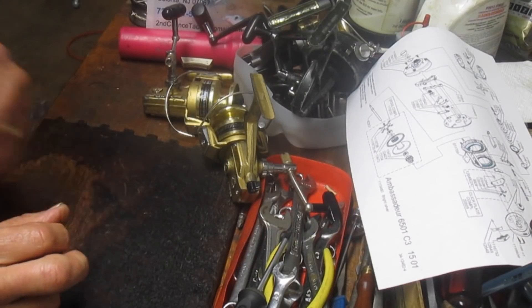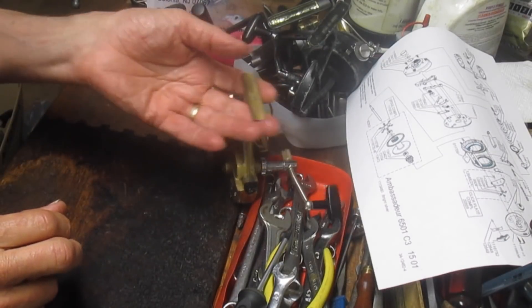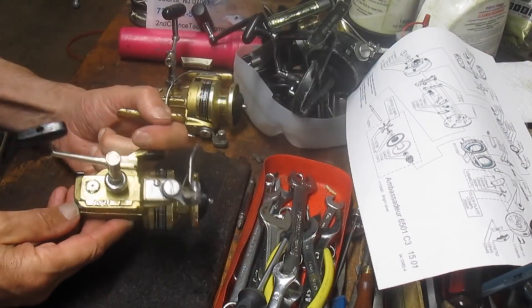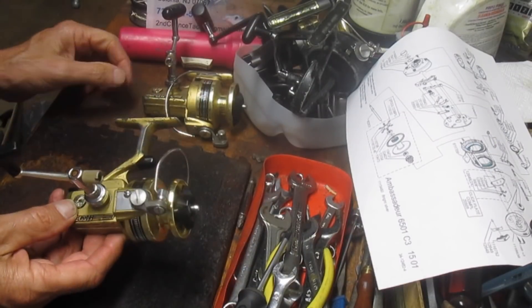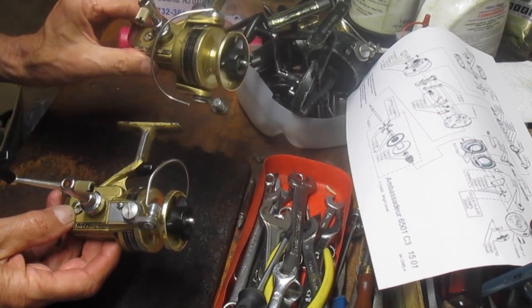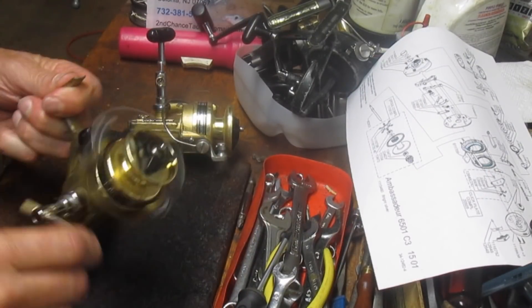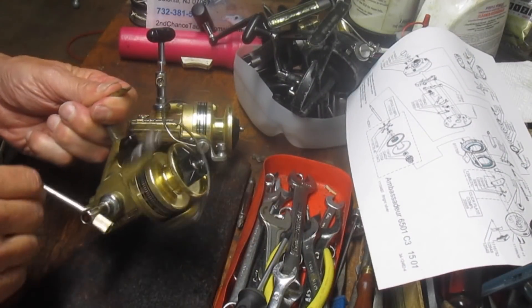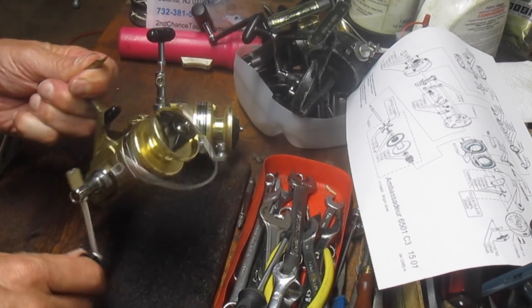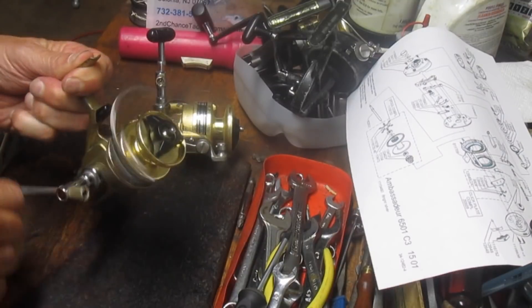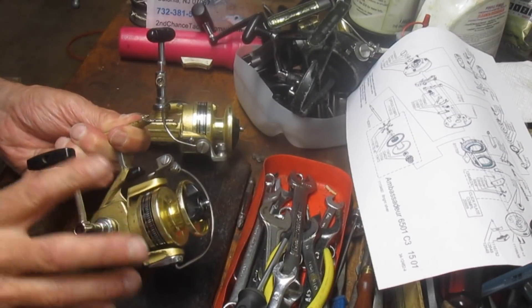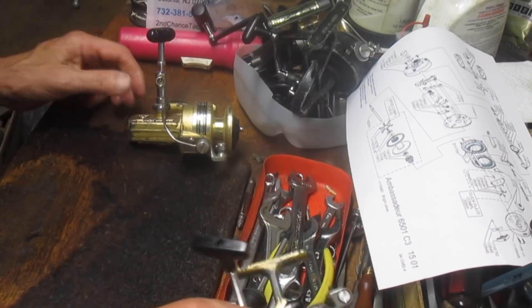Next one up is some of my favorite reels. They're Daiwa. I bought two GS reels, the 13 and the 15. The 13 is just kind of struggling. It's tight, and it also has a little bit of a hum to it. I'm thinking that one's dirty. We're going to take that one apart.